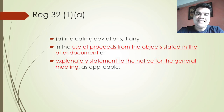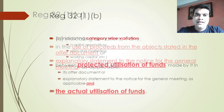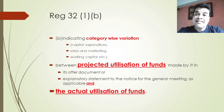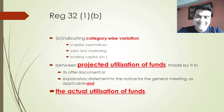What are these statements? A statement indicating deviations, if any, in the use of proceeds from the object stated in the offer document or in the explanatory notes to the notice of the general meeting, whichever is applicable, indicating category-wise utilization. Categories would be capital expenditure, sales and marketing, and working capital. It shall give a statement between the projected utilization of funds made in the offer document or explanatory statement.